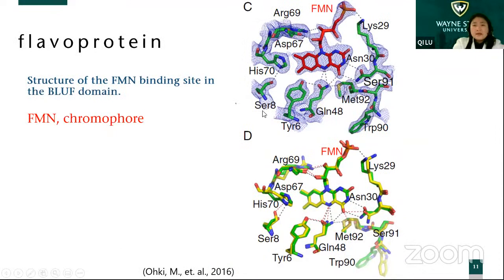On the binding side, the BLUF domain — we can see the chromophore FMN forms many interactions with the BLUF domain. The chromophore FMN is binding inside and shows a very highly interconnected hydrogen bond network between the chromophore.